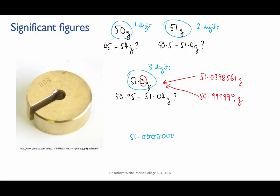Note that if we had absolutely no measurement error, then we could write the mass to an infinite number of decimal places. Exactly 51 grams would be written like that.